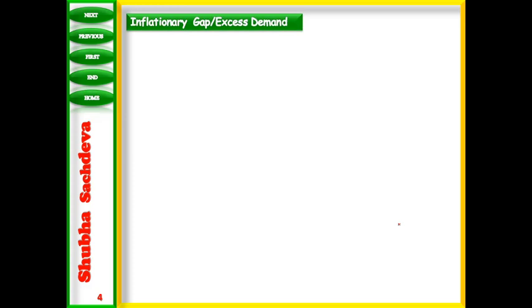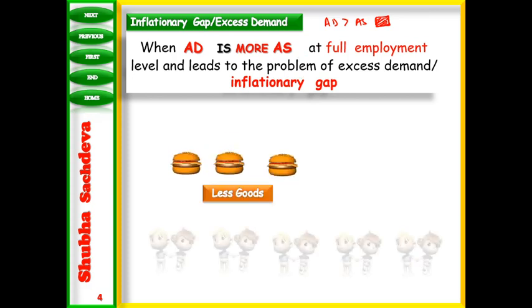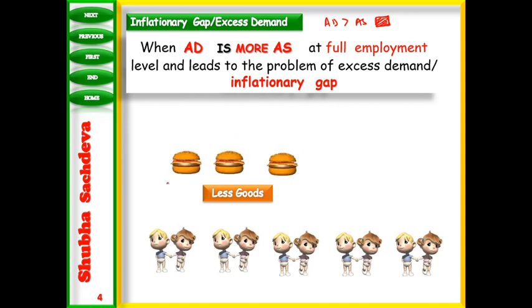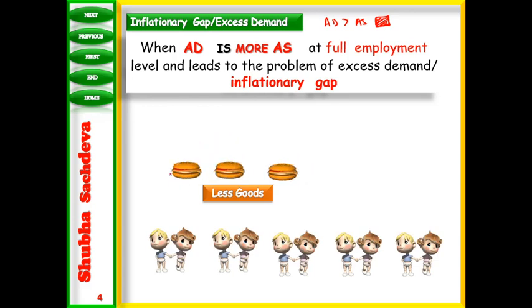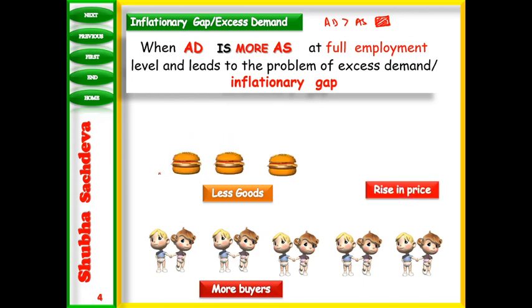What is inflationary gap? What is excess demand? It occurs when our aggregate demand is greater than aggregate supply at the full employment level. Full employment means all resources are completely utilized — not even a single resource is unutilized. But still demand is more and supply cannot be increased. When aggregate demand exceeds AS at full employment, goods are fewer, buyers are more, so to control demand we have to raise prices.